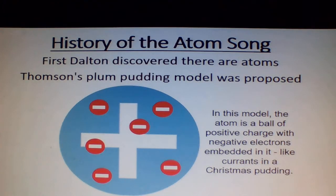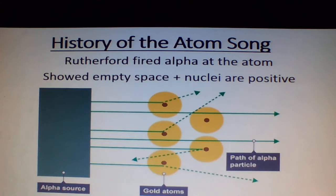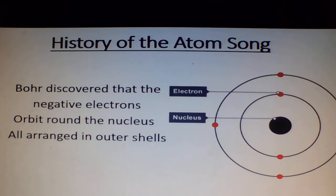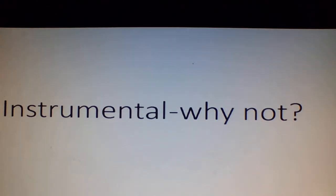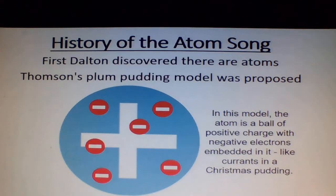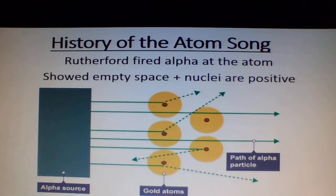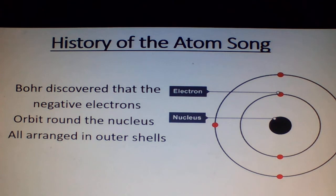Stolter discovered there are atoms. Dobson's plum pudding model was composed. Rutherford fired alpha at the atom, showed empty space and nuclei are positive. Bohr discovered that the negative electrons orbit round the nucleus, arranged out as shells.